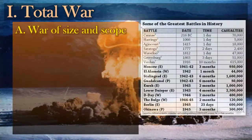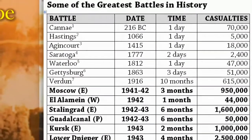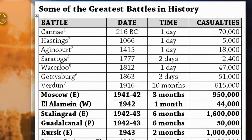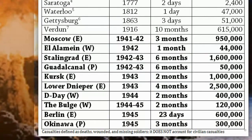The first definition is that the size and scope of war dramatically increases. I have this table right here that talks about some of the greatest battles in Western history and the day-to-day casualties that came about from these particular battles. As a result of the Industrial Revolution, you can supply with greater frequency not just material but also men as well.